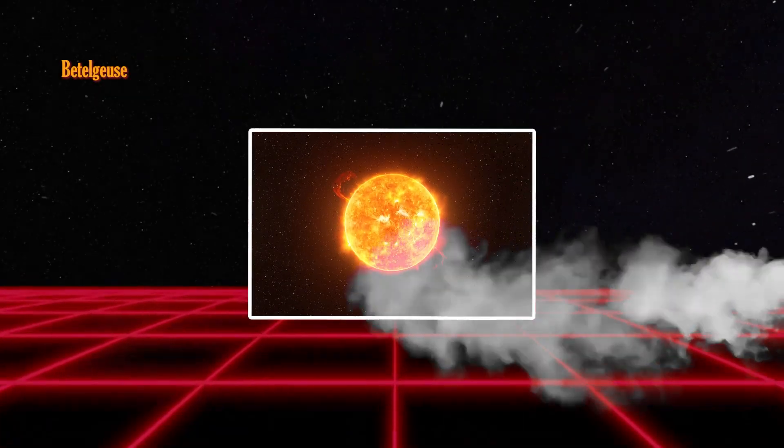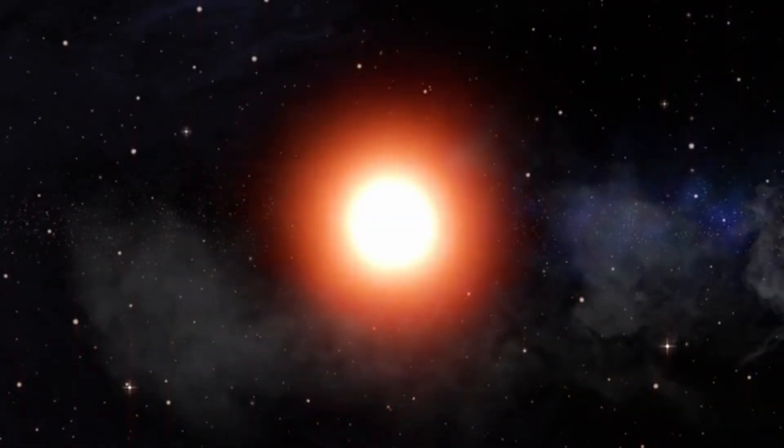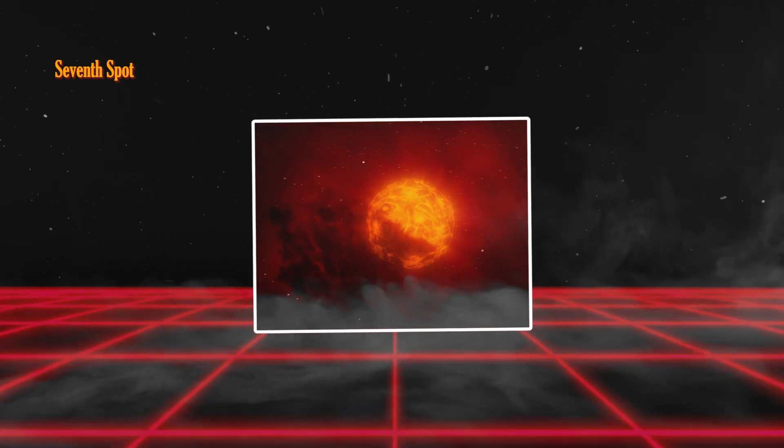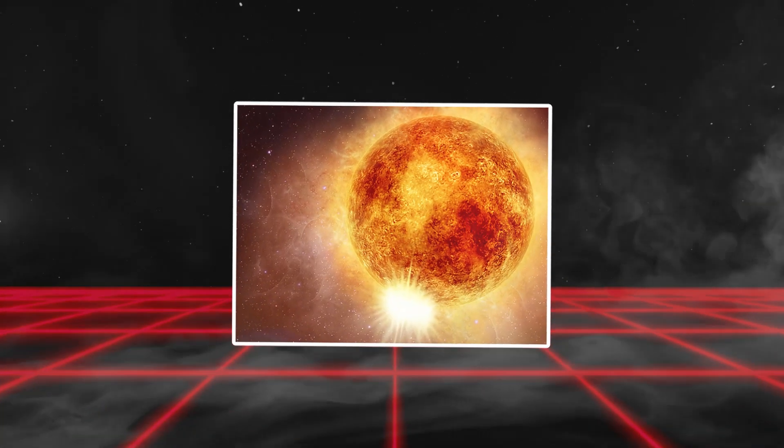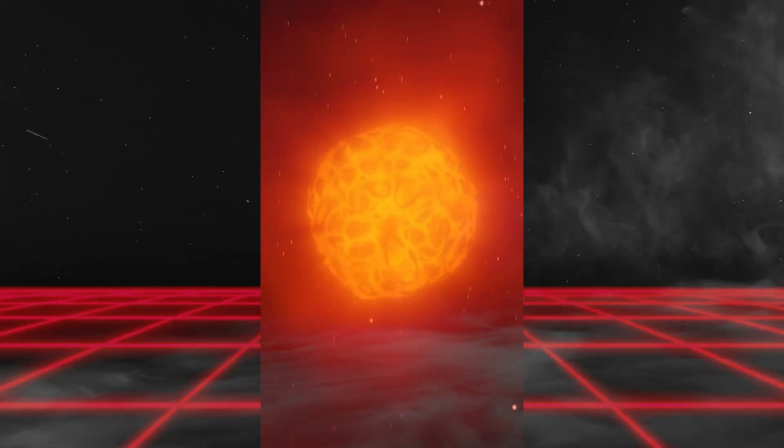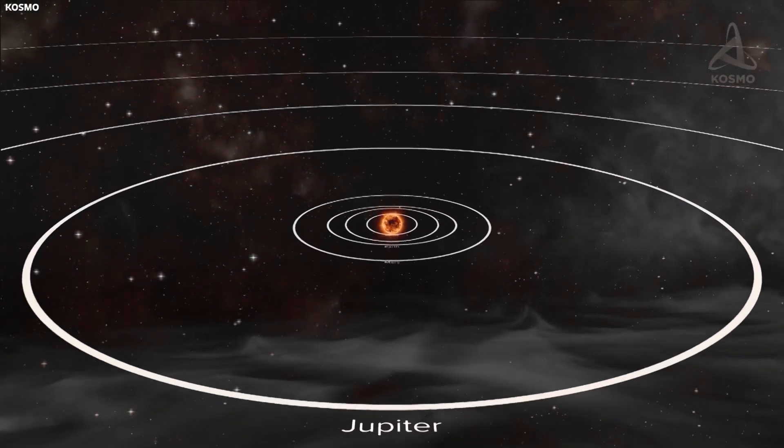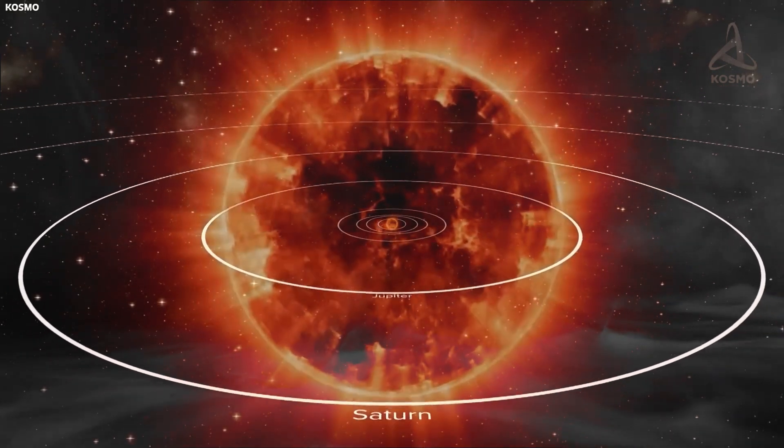Picture this. Betelgeuse, the once-tenth-brightest star in our nightly extravaganza, is now flexing its celestial muscles and claiming the seventh spot. That's right. It's not just a star. It's a stellar superstar. This cosmic icon is so colossal that if it were the centerpiece of our solar system, it would stretch all the way out to Jupiter's orbit. Talk about outshining the neighborhood.